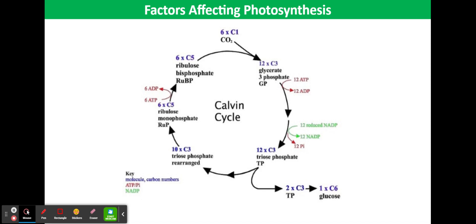At temperatures above 45 degrees C, enzymes involved in photosynthesis may be denatured. This would reduce the concentrations of GP and TP and eventually of RUBP, as it cannot be regenerated due to the lack of TP.